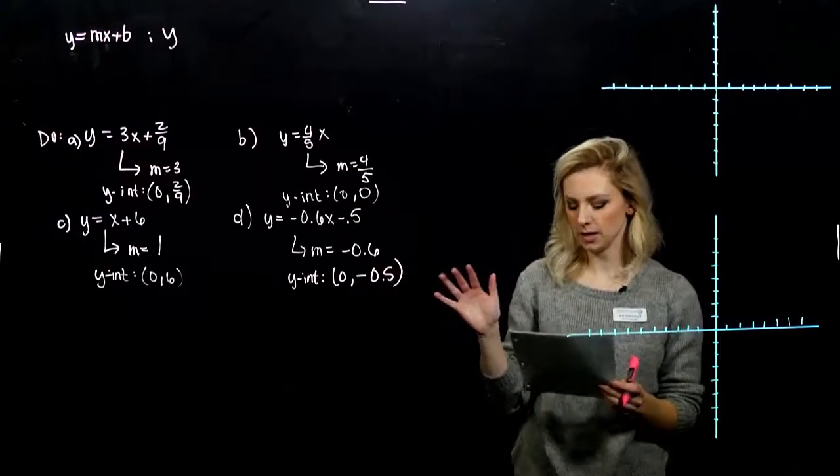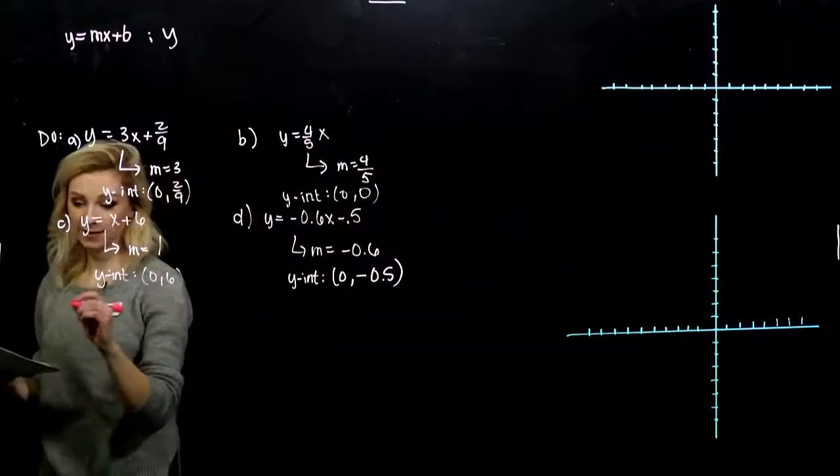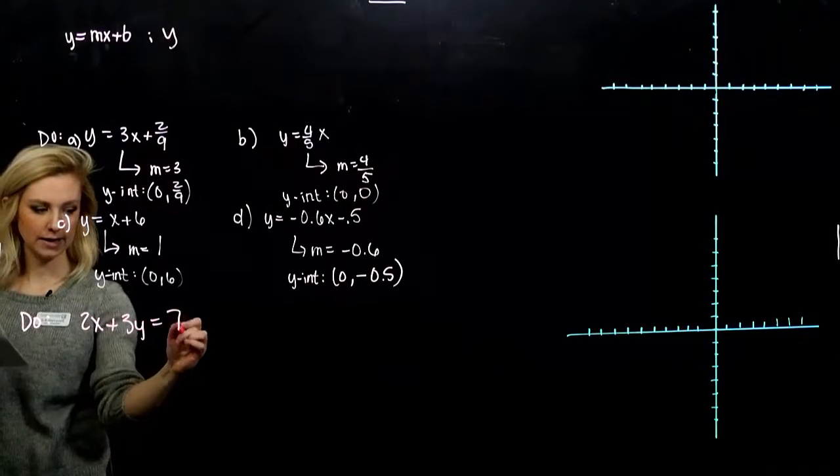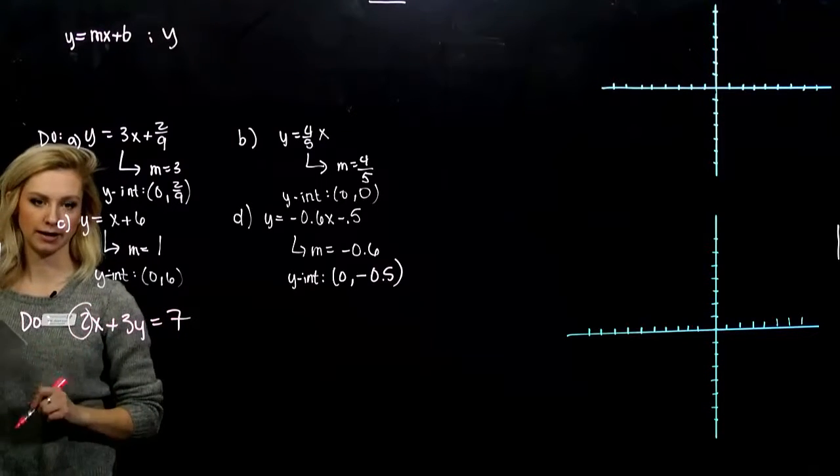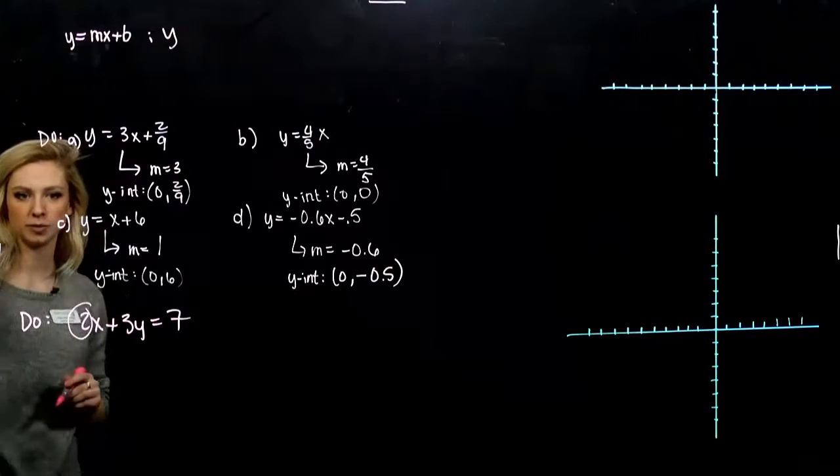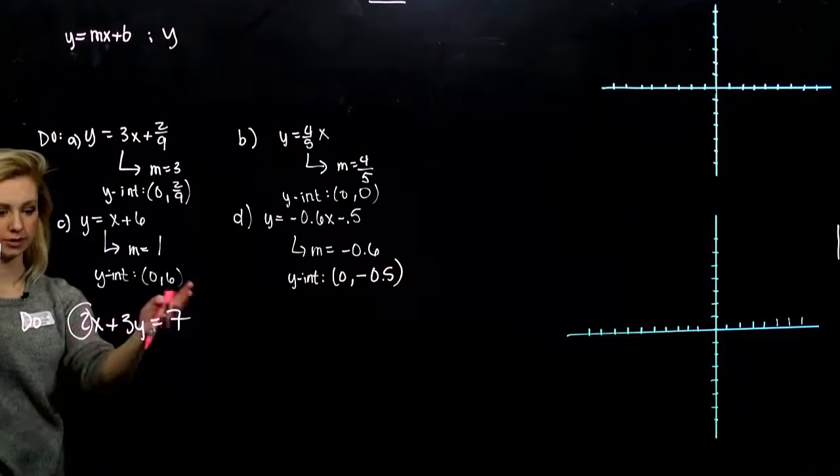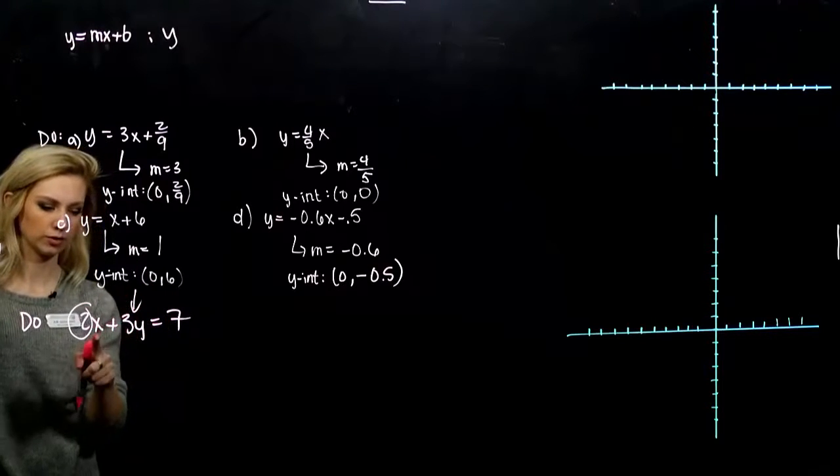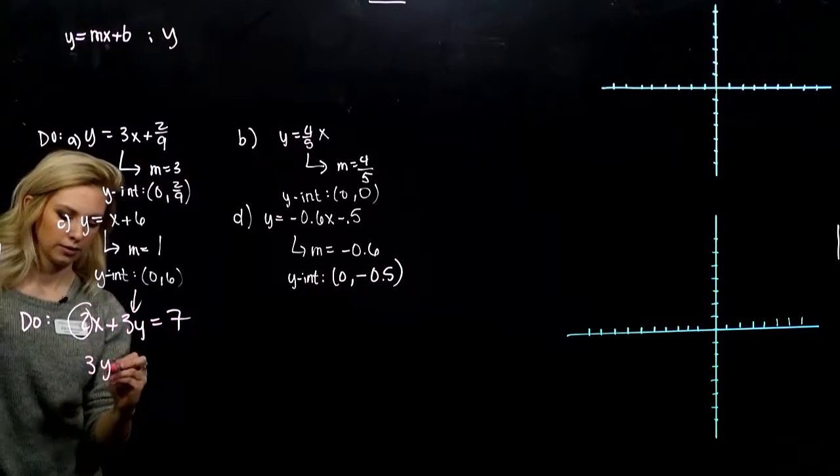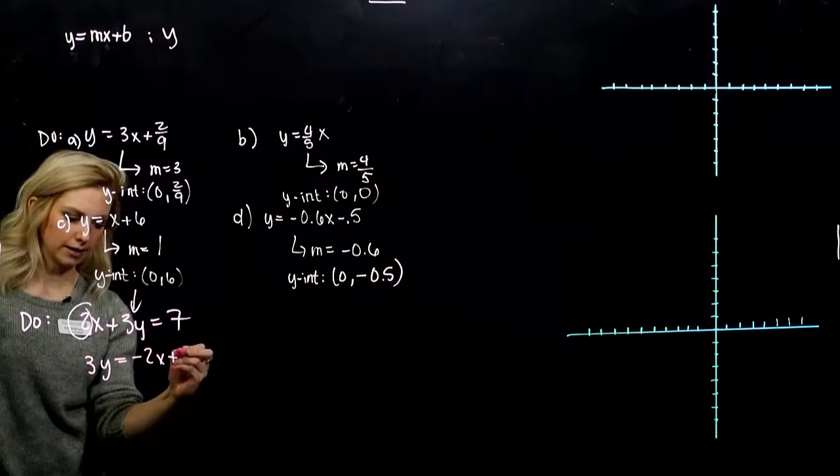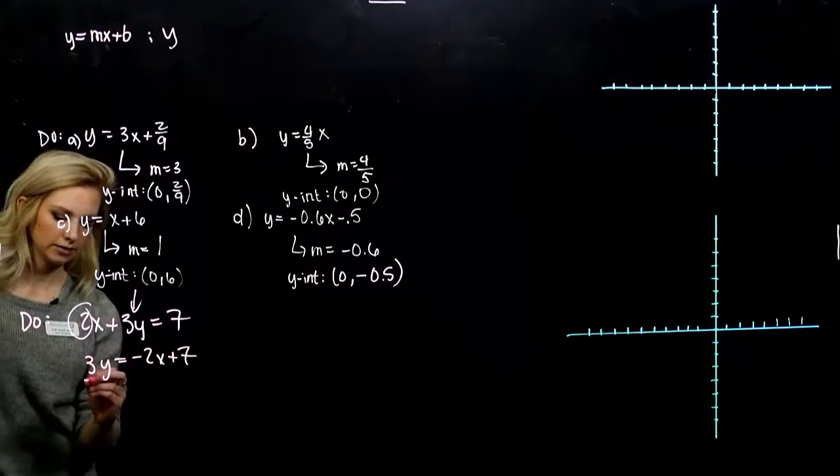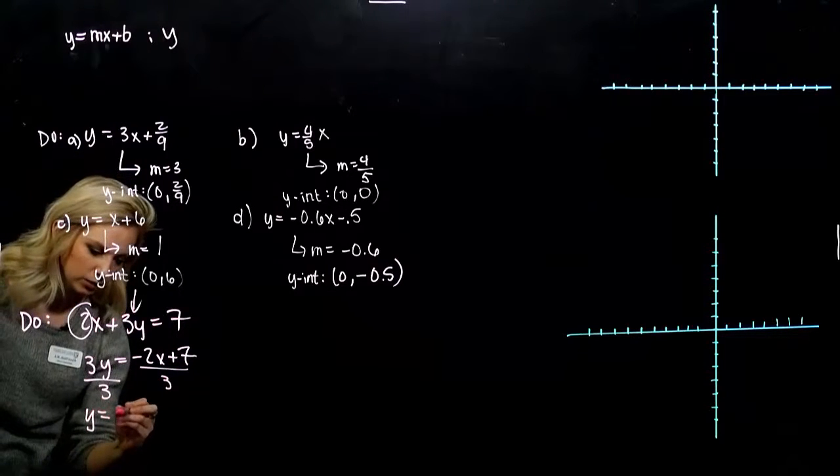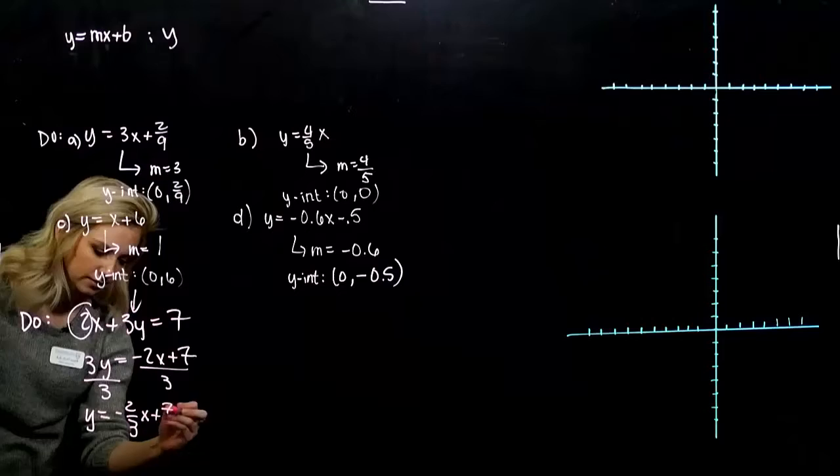So it has to be in that y equals mx plus b form. So if it's not, like the next example, I can't choose the coefficient on x right now as my slope, because that's not true. It's not equal to 2. We'll see what it's equal to. In the end, we need to get y on its own. So I need to move 2x to the other side. And I need y on its own. We divide everything by 3. So y is equal to minus 2 thirds x plus 7 thirds.